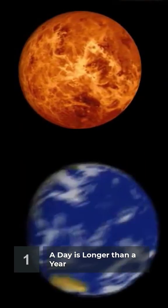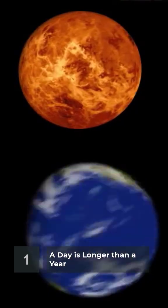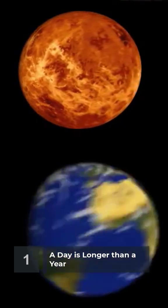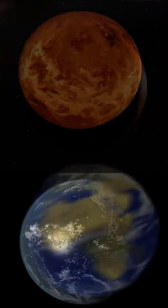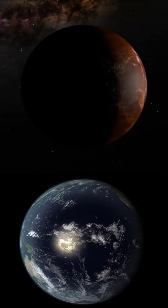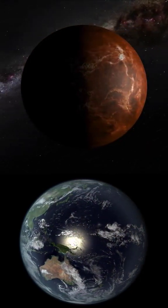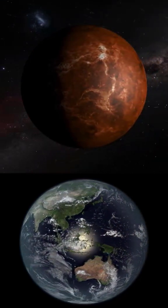Number 1. A day on Venus is longer than a year on Earth. It takes Venus 243 Earth days to rotate once around its axis, and about 225 Earth days to complete one orbit around the Sun.